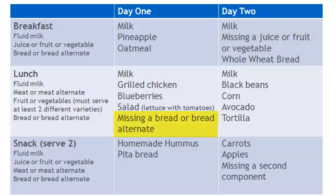For lunch on day one, the menu needed to list a bread-bread alternate in order to meet the meal pattern. And for snack on day two, both of the foods listed come from the same component — the fruit and vegetable component. A second non-fruit or vegetable component, such as peanut butter, needed to be listed on the menu in order to meet the children's meal pattern for snack.